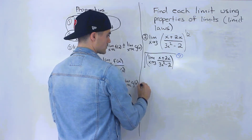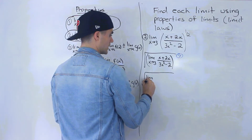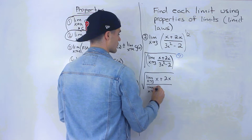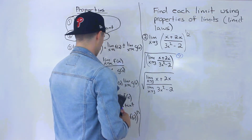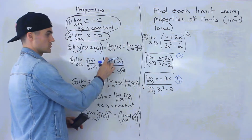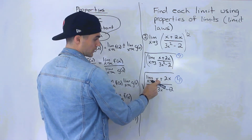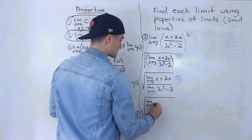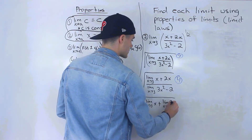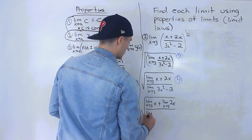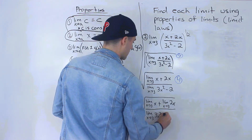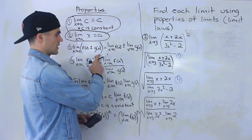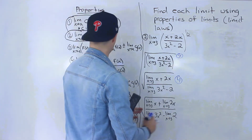That was law number seven. Next, we distribute the limit to the numerator and denominator using law number four, giving us the square root of: limit as x approaches three of x plus two x, all over limit as x approaches three of three x squared minus two. Then applying law number three to distribute to each term: limit as x approaches three of x, plus limit as x approaches three of two x, all over limit as x approaches three of three x squared, minus limit as x approaches three of two.